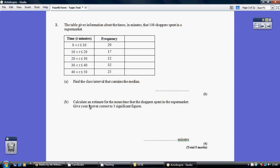So, when we get on to part B, calculate an estimate for the mean, we're going to have to just assume that these 20 shoppers spent on average 5 minutes in the shop. We just don't know, so we take the midpoint.